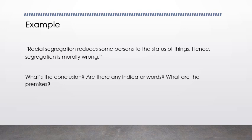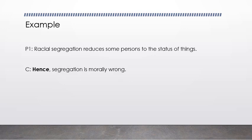Let's look at another example from the assignment — number one in the 'Distinguishing Premises from Conclusions' exercises: 'Racial segregation reduces some persons to the status of things; hence, segregation is morally wrong.' We ask ourselves: what's the conclusion, are there any indicator words, and what are the premises? We've got the word 'hence' — an indicator word telling us the conclusion: 'hence, segregation is morally wrong.' The premise is that racial segregation reduces some persons to the status of things.